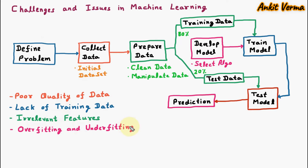The next challenge is overfitting and underfitting. We use training data to train the model, but sometimes we take so many features that are not even required — this overloading is called overfitting. In the second case, sometimes we take very few features in the training data — this is called underfitting. Features more than the requirement are overfitting and features less than the requirement are underfitting. This is a challenge in machine learning.